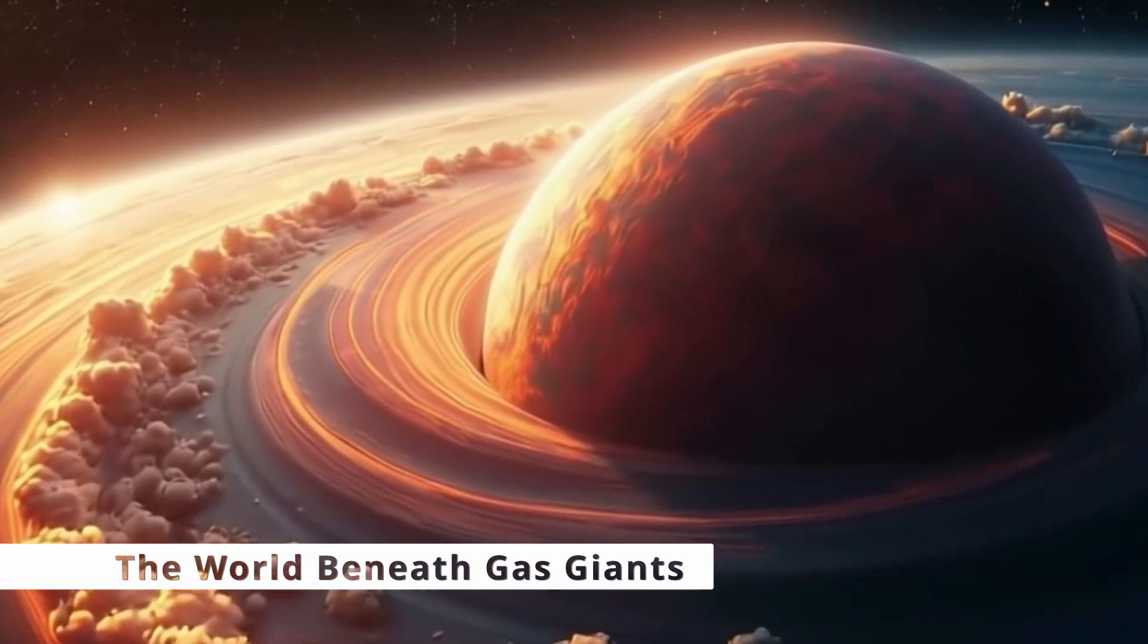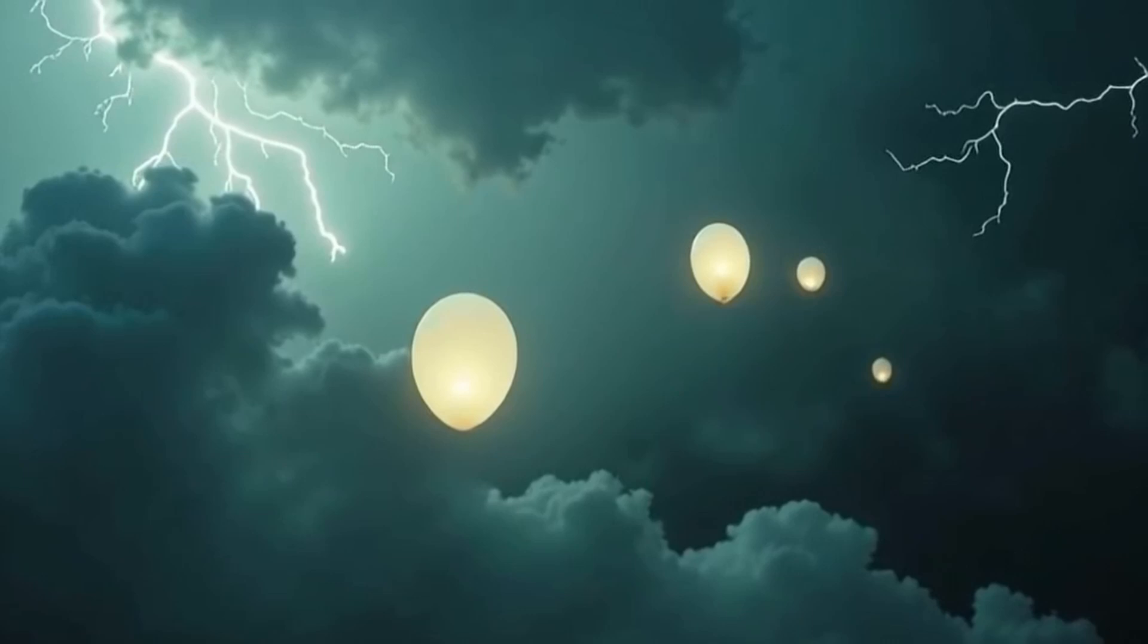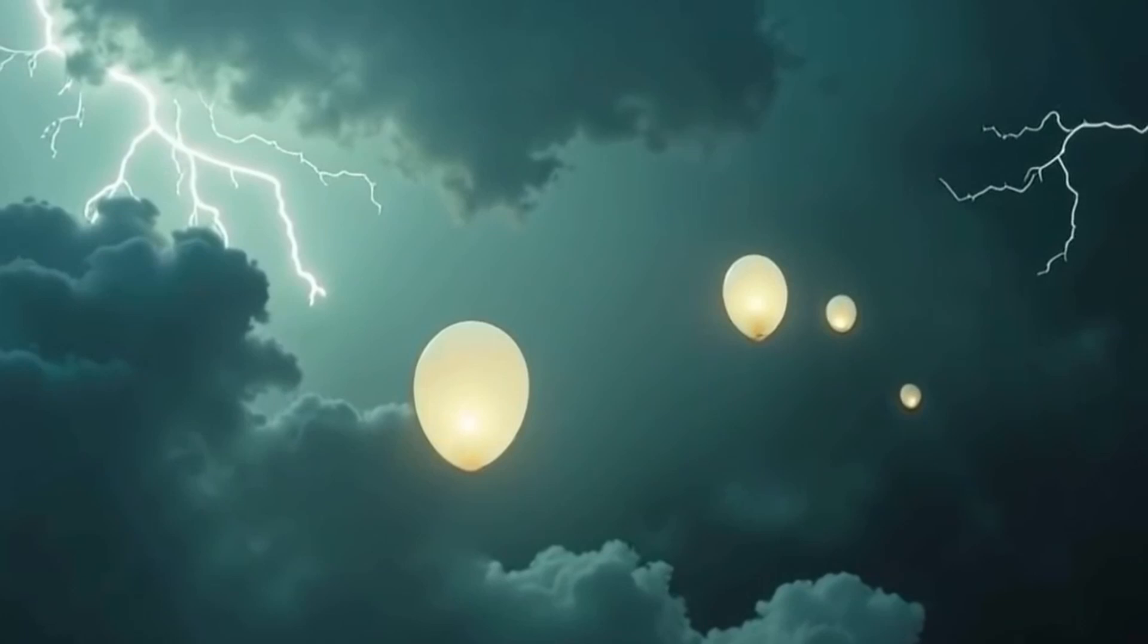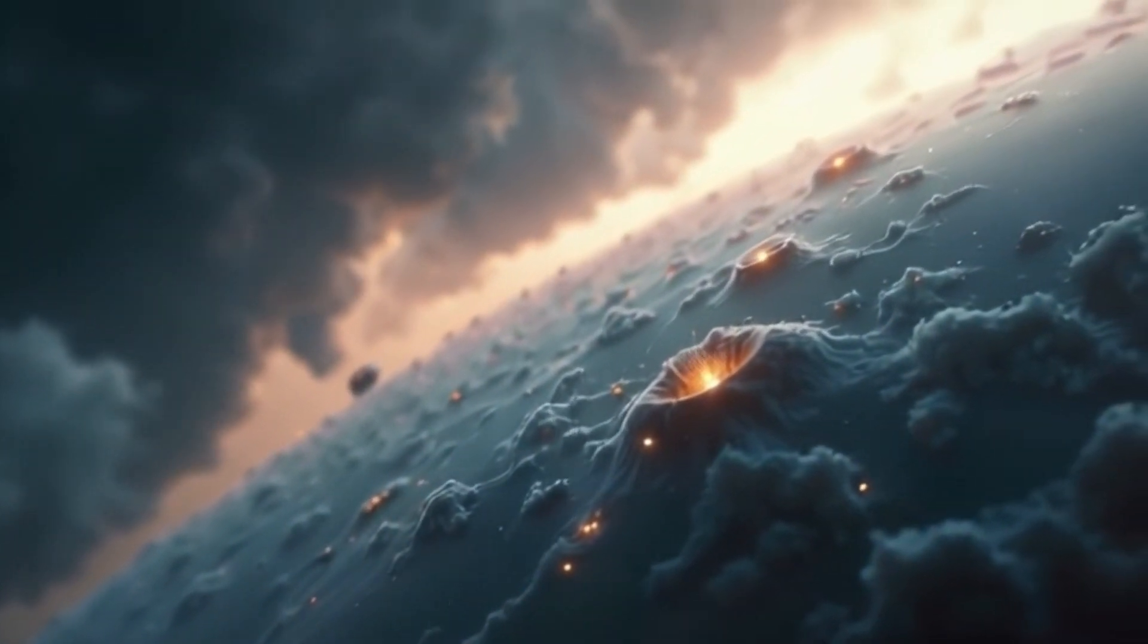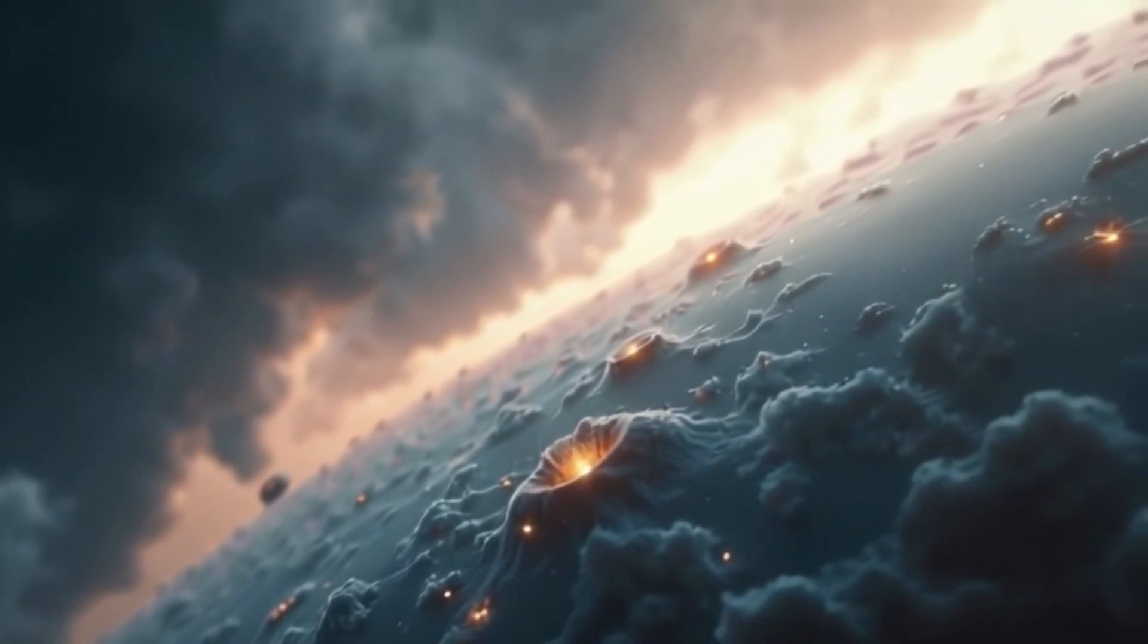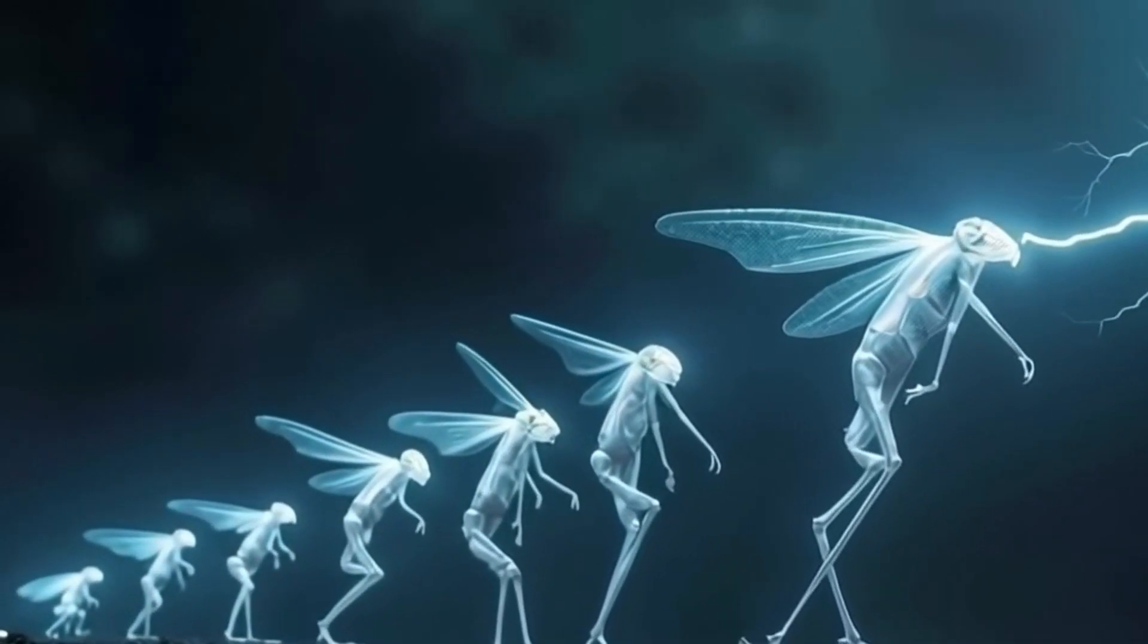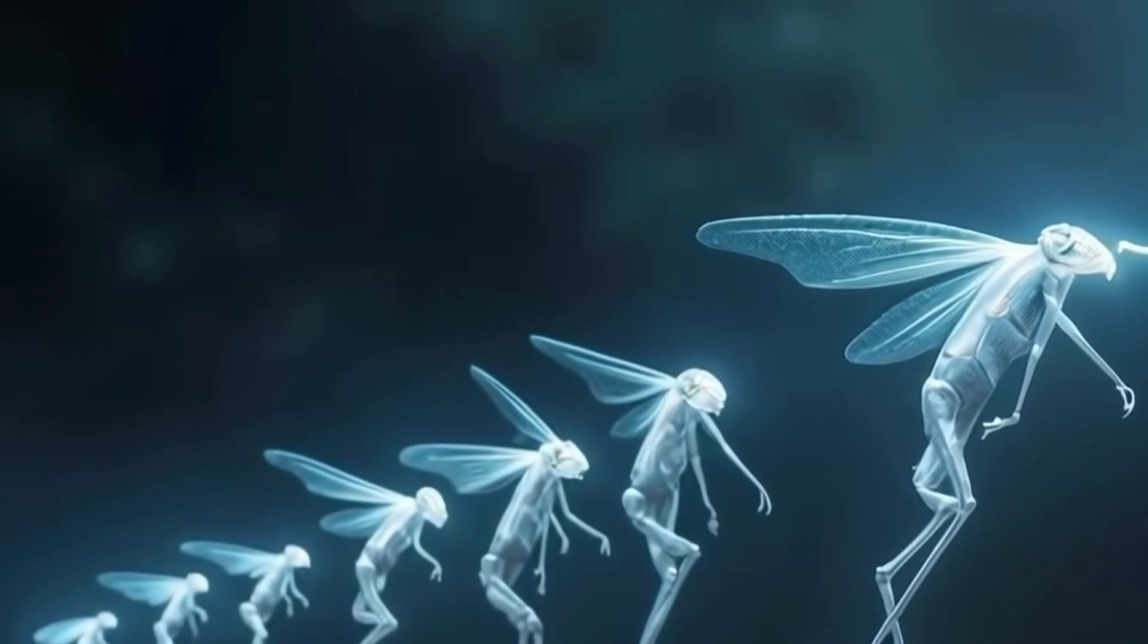Yet, could they harbor life in their thick, turbulent skies? Imagine life forms floating above these violent clouds, buoyed by lighter-than-air gases and sustained by electrical storms. Electromagnetic fields, lightning, and the planet's natural energy could provide the sustenance these life forms need to thrive. Over millions of years, these floating life forms would adapt to their environment, developing specialized organs to harness the storm's power.